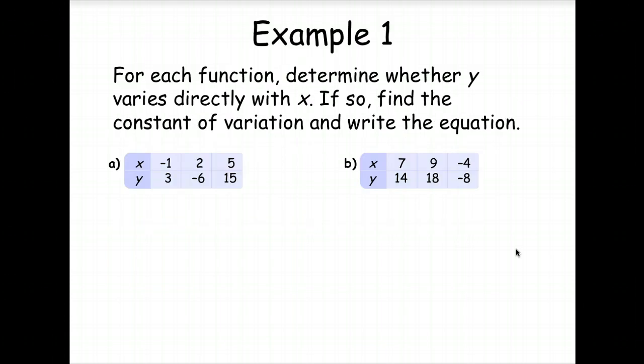So let's look at that. For each function, determine whether Y varies directly with X. And if so, find the constant of variation and write the equation. So let's look at A together. So we're going to write it as Y over X. 3 over negative 1 gives us negative 3. Negative 6 over 2 gives us negative 3.